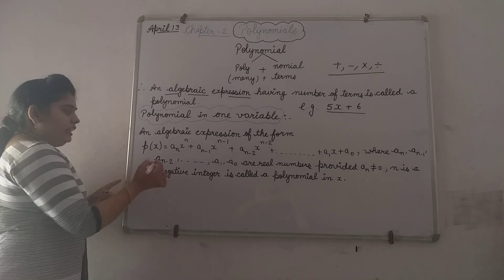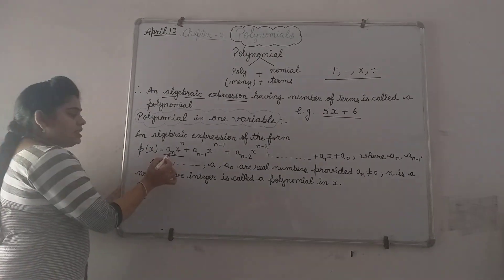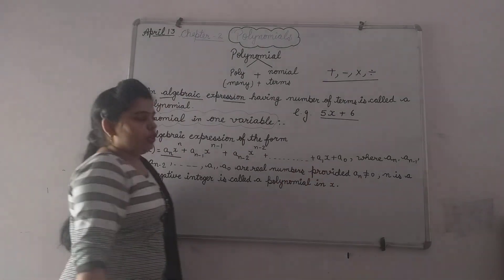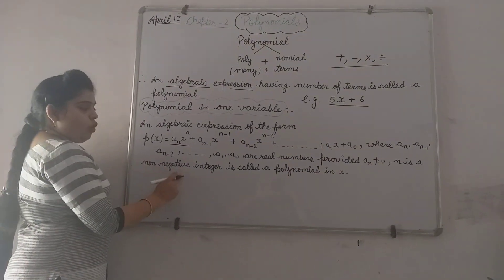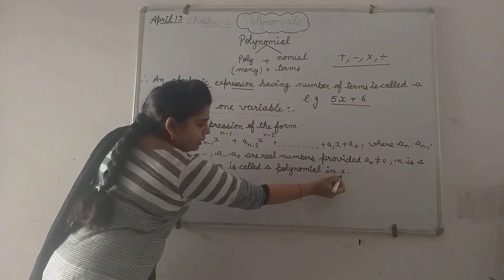And one more condition is there. Coefficient of x raised to the power n, this an, cannot be equal to 0. And n is a non-negative integer is called a polynomial in variable x.